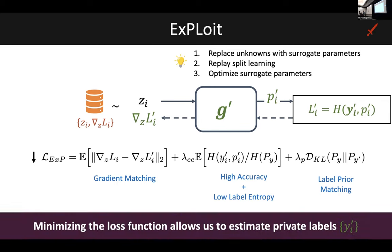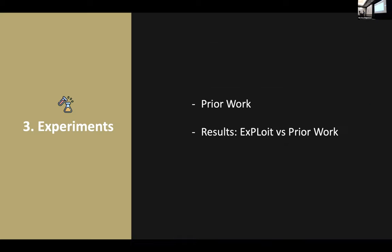By minimizing this loss function, we can optimize the surrogate labels Y prime, and these surrogate labels become good estimates of the true private labels, as I'll show in our results. Before presenting results, I'll provide a quick overview of recent prior work in the label leakage attack literature, and then present key results comparing EXPLOIT with those prior works.